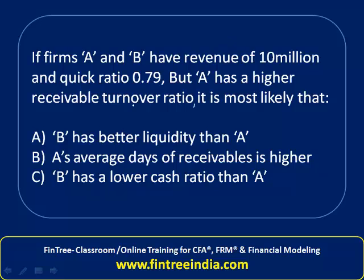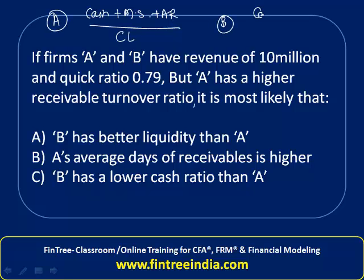Quick ratio is calculated as cash plus marketable securities plus accounts receivable divided by current liability. The quick ratio for both firms is the same, which is given as 0.79.